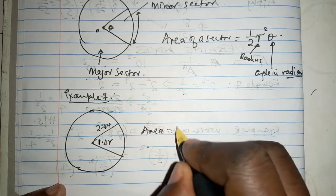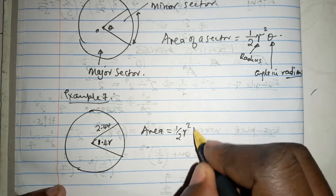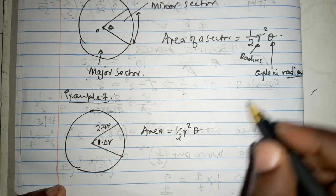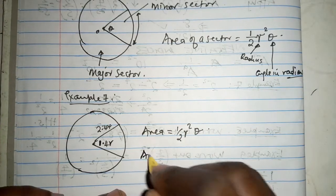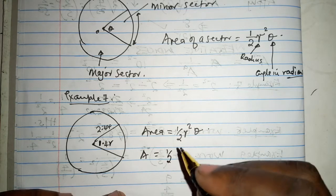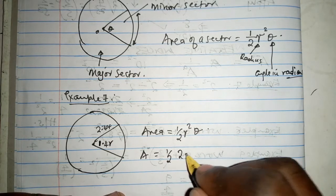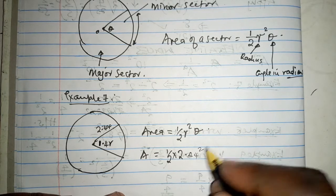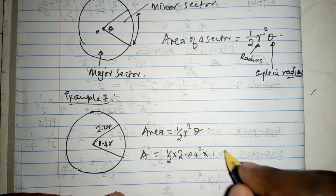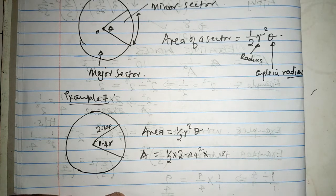So, the area basically is a half R squared theta, where theta is in radians, we have understood in this topic, in this formula. So, the area is a half R squared is 2.44 squared, of course, times 1.4, times 1.4.